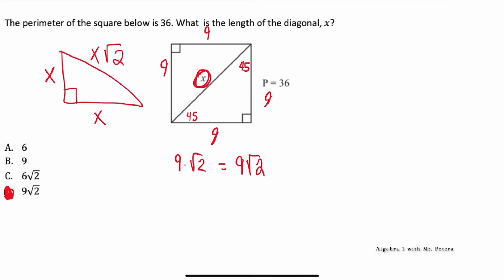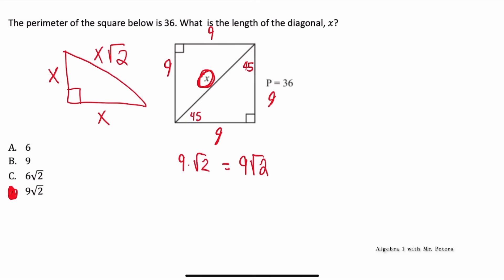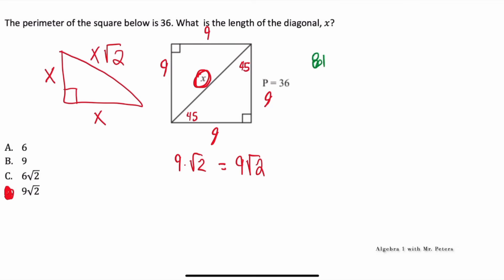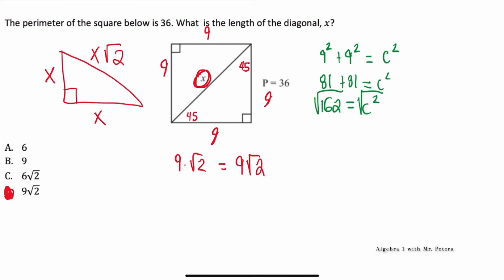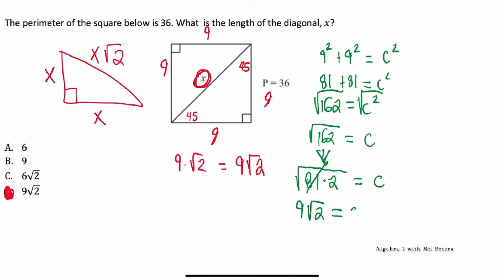Now, if you can't remember that special 45-45-90 triangle relationship, we could use the Pythagorean theorem. So we say nine squared plus nine squared is equal to C squared. We have 81 plus 81 is equal to C squared. When we simplify, 162 is equal to C squared. Taking the square root of both sides, radical 162 equals C. Once I break this down, this would be the square root of 81 times 2, which simplifies to nine radical two equals C. So you can use the Pythagorean theorem in this problem if you get confused on the special right triangle side lengths.